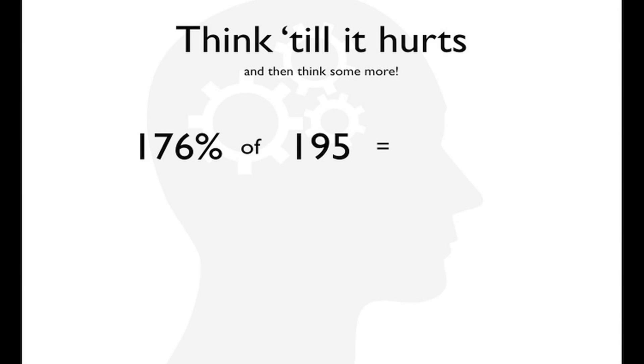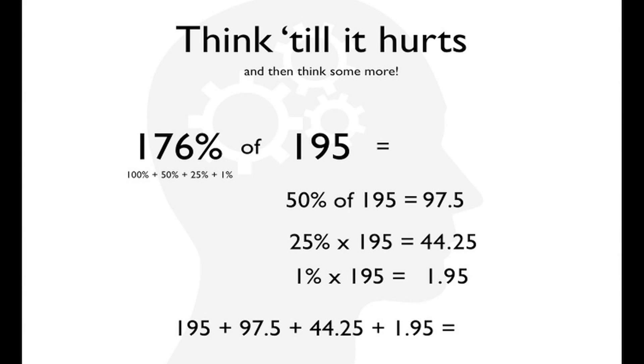The reason these ones are harder is we have to break them up into more parts. So, breaking up 176%, one way to do it is 100% plus 50% plus 25% plus 1%. Well, we know what 100% is, so 50% of 195, using our speed halving technique, we get 97.5. 25% of that 195 is just going to be half of 97.5, or 44.25. 1% of 195 is just 1.95, and finally, we just add them all up. We get our final answer of 343.2.